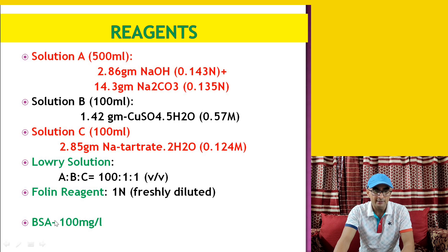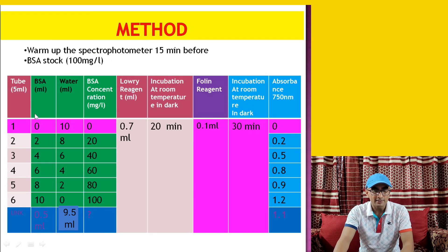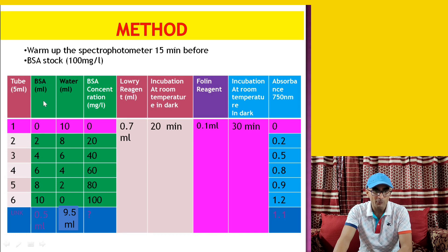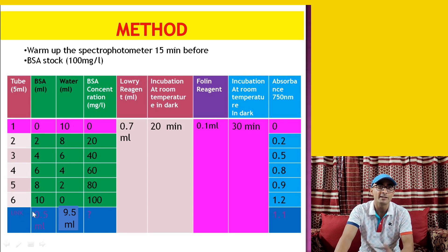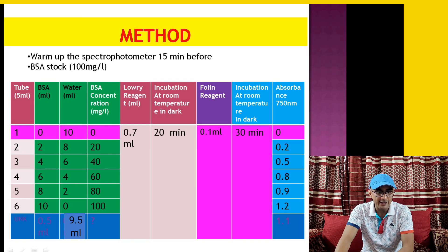Dilutions are prepared using at least six tubes. In the first tube (blank), 0 ml of BSA and 10 ml water are used, giving 0 mg/L BSA. In the second tube, 2 ml BSA and 8 ml water give 10 mg/L BSA, and so on up to 100 mg/L. For the unknown sample, 0.5 ml of sample is added to 9.5 ml water to make 10 ml total volume.